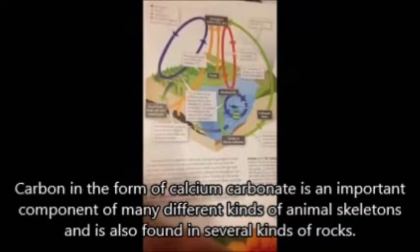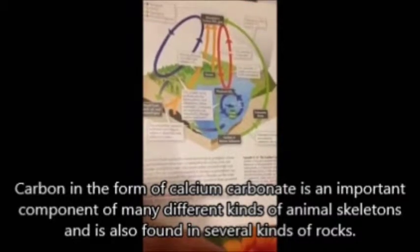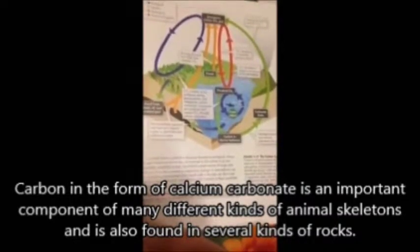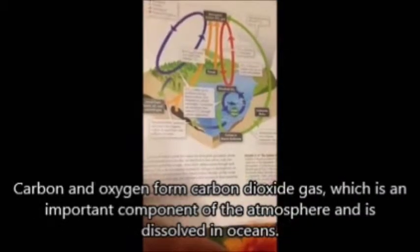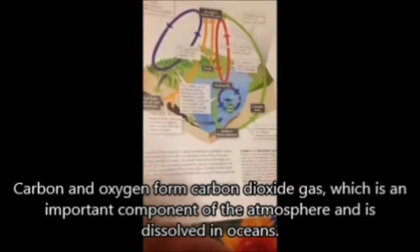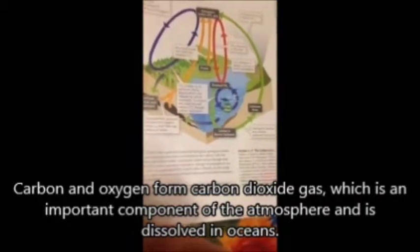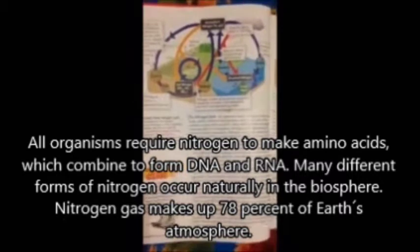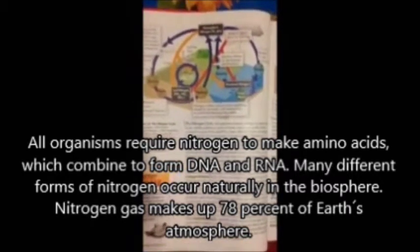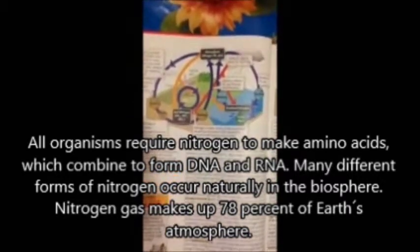Carbon in the form of calcium carbonate is an important component of many different kinds of animal skeletons and is also found in several kinds of rocks. Carbon and oxygen form carbon dioxide gas, which is an important component of the atmosphere and is dissolved in oceans. All organisms require nitrogen to make amino acids, which combine to form proteins, as well as DNA and RNA.